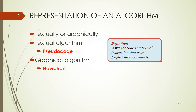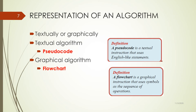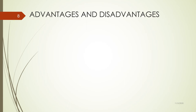A pseudocode is a textual instruction that uses English-like statements — very simple, just write the instruction as if you are instructing someone to do something. For a flowchart, we use graphical instructions with symbols that denote input, process, and output, along with other annotations. You might ask: what are the advantages and disadvantages of both the flowchart and the pseudocode?